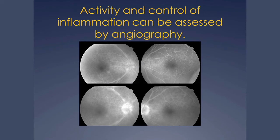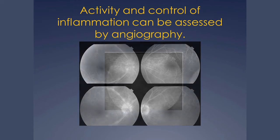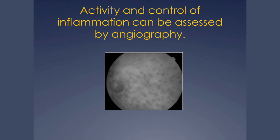Many of you will know about fluorescein angiography. Two dyes are used: the fluorescein dye tells us how active the condition is and how much leakage there is from the retinal blood vessels — fuzzy-edged photographs indicate active inflammation. We also need to know about the choroid behind the retina, which requires a different, green dye called ICG. With ICG, inflammation shows up as a series of dark spots.